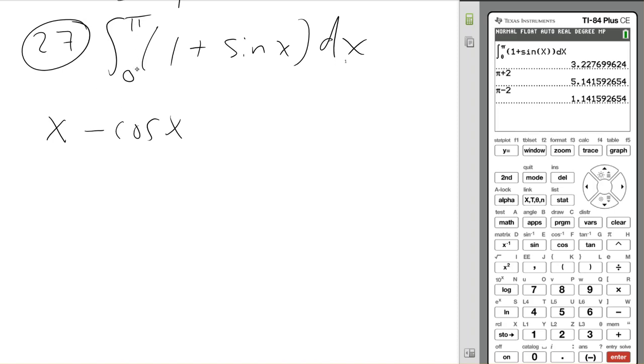Now, if we didn't have bounds here, then we would need a plus c. But because we have 0 to pi, you should have, first time, plugged in pi. So that would be pi minus cosine pi. The second time, you should plug in 0. So 0 minus cosine 0. And then, in the end, subtract those two things.